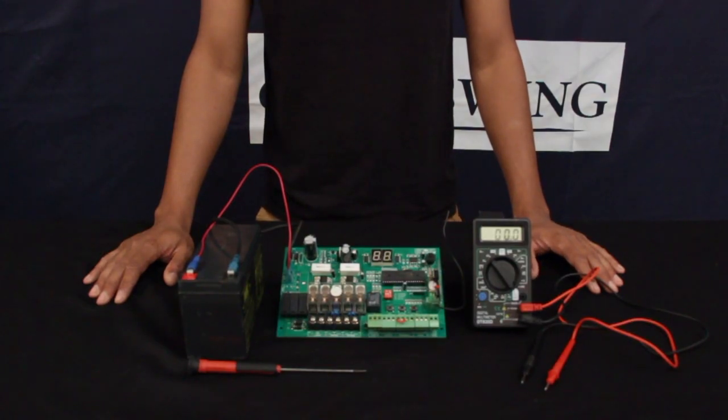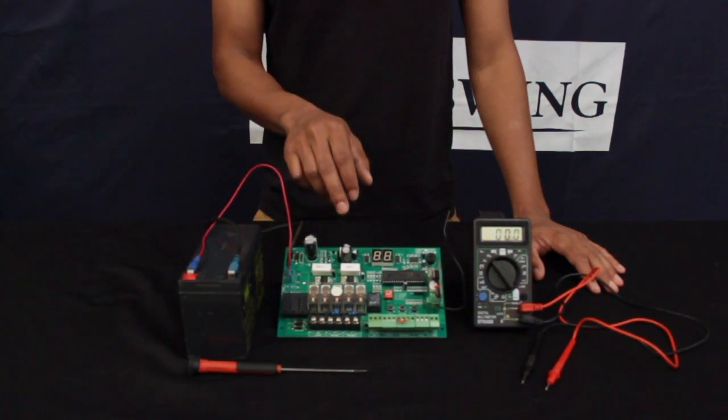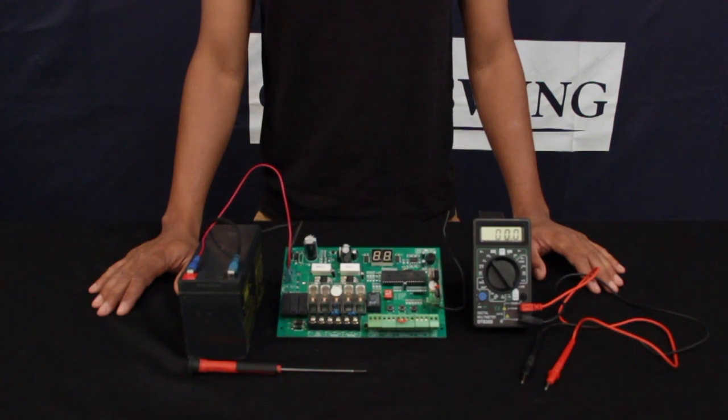So to start off, we're going to go over the draw of the control board. This is important because people do run the system solar. The draw at rest is 20 milliamps. When you go into operating the parameters or operating the gate, the draw is going to go up to about 100 milliamps.